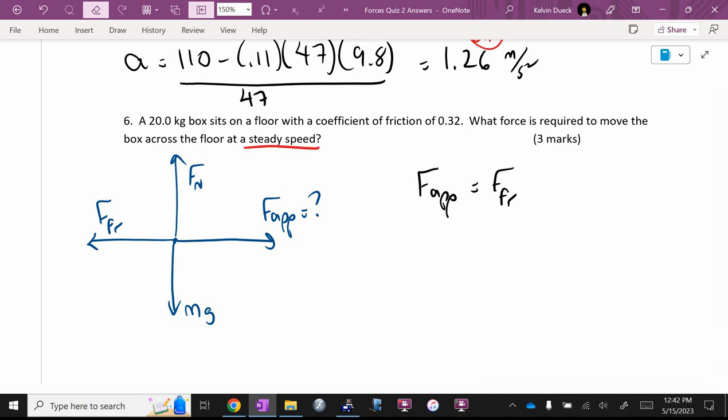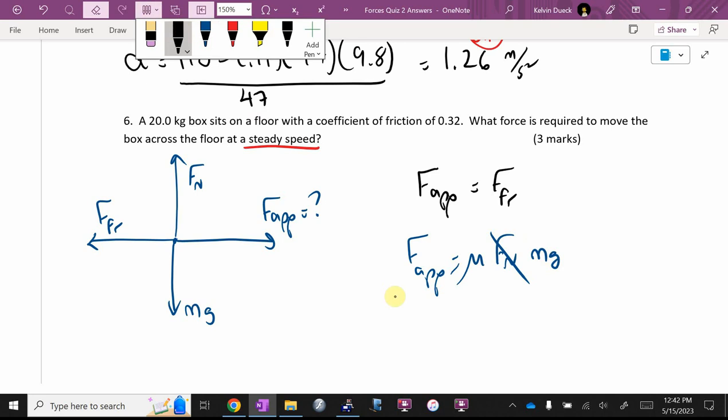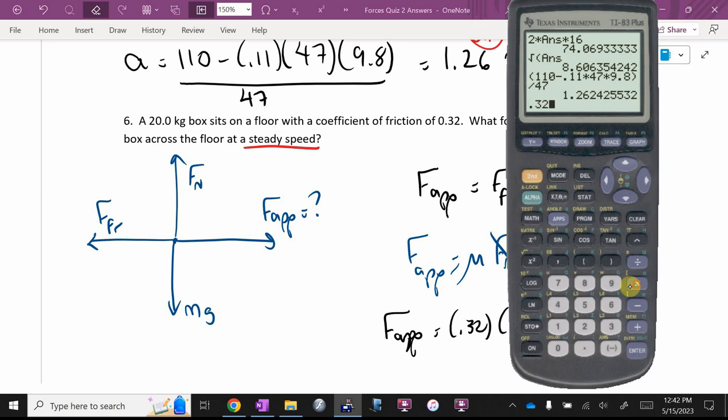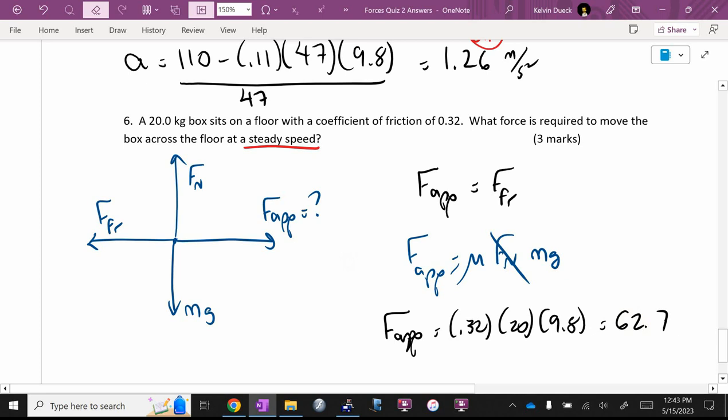Davin, friction is what times what? Mu times normal force. I don't know the normal force. Oh, but look, look, look, look, look, look. MG F applied is going to be, what's mu? I don't know what's mu with you. 0.32 times 20 times 9.8. 0.32 times 20 times 9.8. And I get 62.7. 62.7. Newtons. If you got that three out of three, otherwise I would give you one mark for that, one mark for that, half mark for the numbers, half mark for the answers.